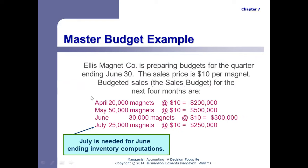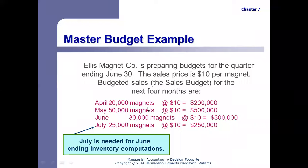This is a sales budget example. This magnet company is preparing budgets for the quarter ended June 30. The sales price averages $10 a magnet. In this whole budgeting process, we have to make assumptions about average sales prices because they probably have a whole bunch of different kinds of magnets that sell for all kinds of different prices. So, we're assuming $10 per magnet as an average of everything they sell. The budget covers April, May, June, and July — we need July so we know how much the ending inventory needs to be for June.